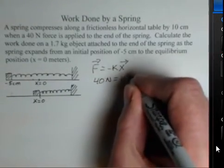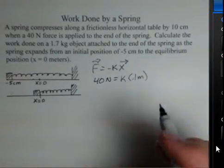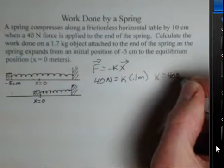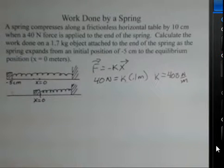40 Newtons equals k times 0.1 meters. I divide by 0.1 meters and get a value of 400 Newtons per meter. That's the force constant for this particular spring.